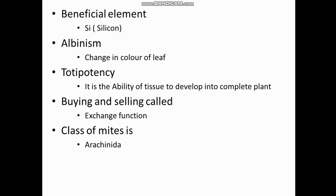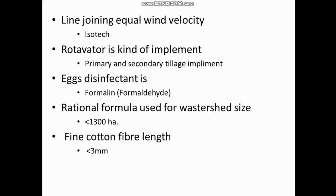Class of mites - mites belong to class Arachnida. Line joining equal wind velocity is called isotach. Rotavator is a kind of primary and secondary tillage implement. Egg disinfectant is formalin, also called formaldehyde - 2% formalin or 2% formaldehyde. Rational formula is used for watershed size of less than 1300 hectares.